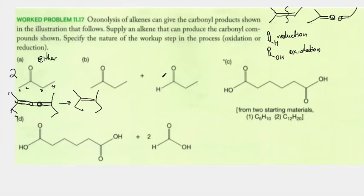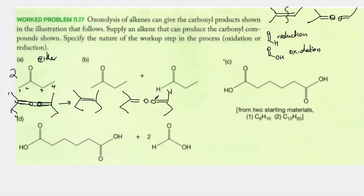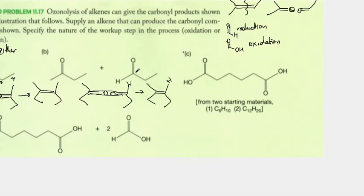Let's look at B. In B they give us two different molecules and we see two C=O's. What I'm going to do is twist them to align my C=O's. This is my hydrogen, one, two, three on each side — always make sure the number of carbons is correct — and that must have been my double bond, where it was in the original alkene. Because I see that the product has an aldehyde C=O-H, I know that this one used reduction.